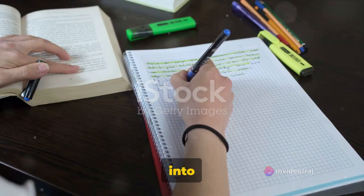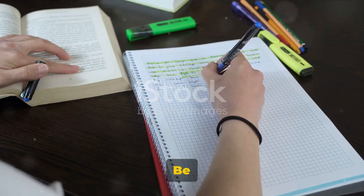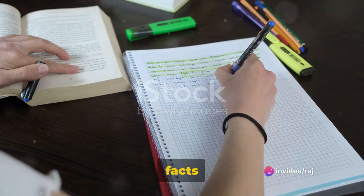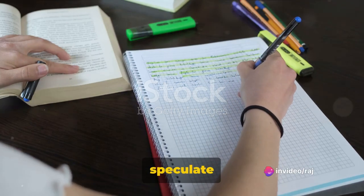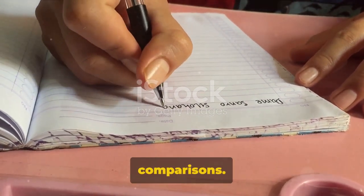Now, in the body paragraphs, you delve into the details. This is where you report the specific data from the chart. Be careful to avoid over-complicating things. Stick to the facts and figures and don't speculate or make assumptions. Use a range of vocabulary to describe trends and make comparisons.